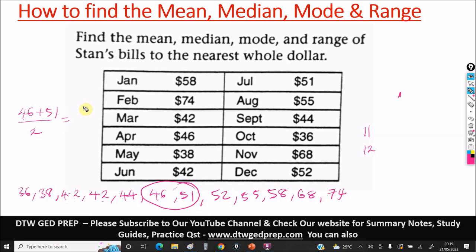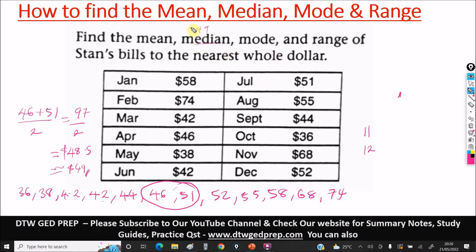When we have an even data set with two middle numbers, we take those two numbers and find their average. So 46 plus 51 equals 97, divided by 2, gives us $48.50. Rounded to the nearest whole dollar — the decimal is 5, so we round up — our median is $49.